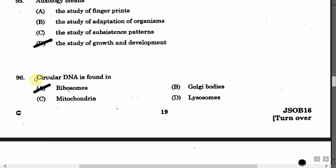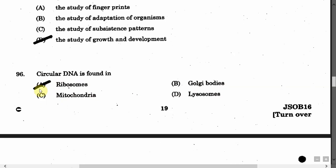The next question is: Circular DNA is found in — Option A: Ribosomes. Option B: Golgi bodies. Option C: Mitochondria. Option D: Lysosomes. The correct answer is Option A, that is mitochondria.